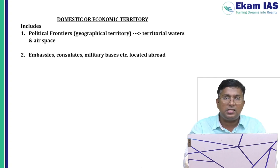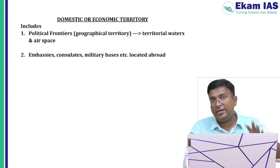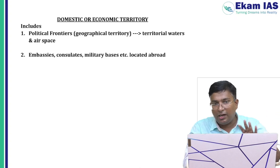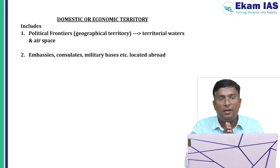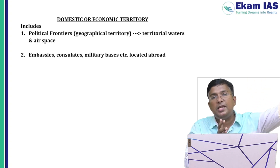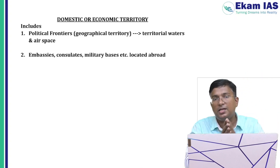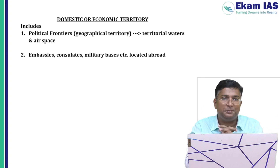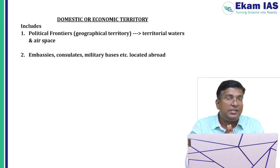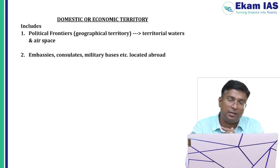So embassies, consulates, and military bases located abroad — be very clear — are also included in the domestic territory. So in the case of India, the Indian embassy in the US, Indian embassy in Bangladesh, Indian embassy in Pakistan — all are part of domestic territory even though they are outside India's political frontier. Another name for domestic territory is economic territory.